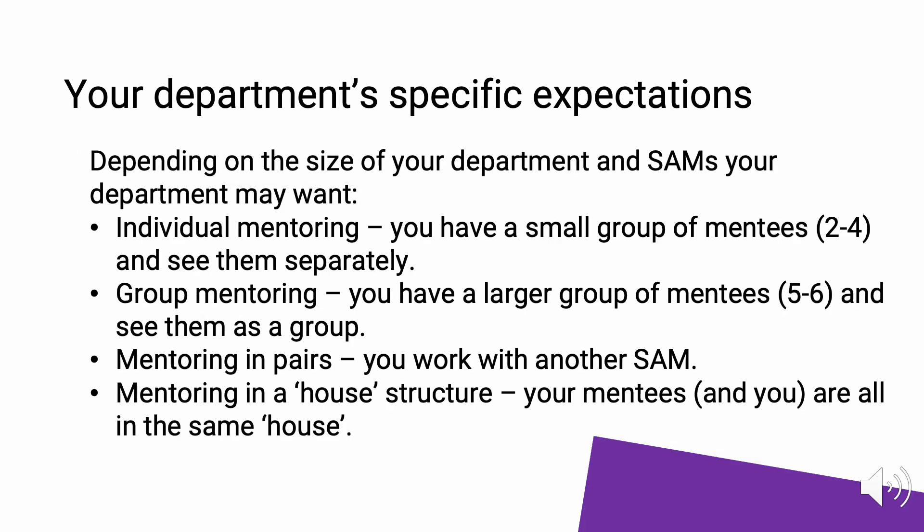Depending on the size of your department and the SAMs, your department may want individual mentoring, where you have small groups of mentees of 2–4 and see them separately; group mentoring, where you have a larger group of 5–6 and see them as a group; or mentoring in pairs, where you work with another SAM. You might also have mentoring in a house structure, where your mentees and you are all in the same house. Some departments use a house structure because it facilitates a supportive atmosphere by giving all members a common identifying factor.